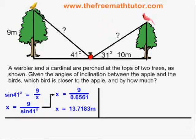Sine of 41 degrees is equal to opposite 9 over hypotenuse x. I plug the values into the formula, and I simplify, and I get 13.7183 meters.